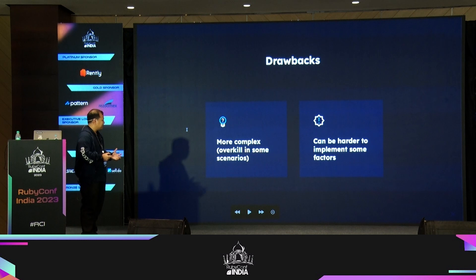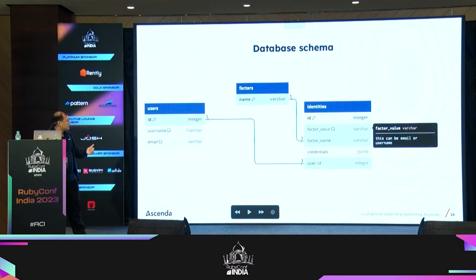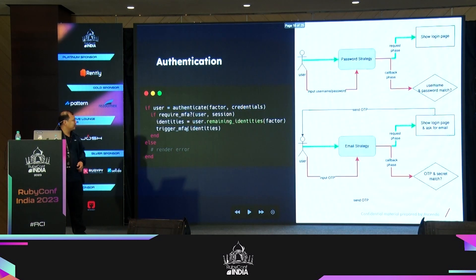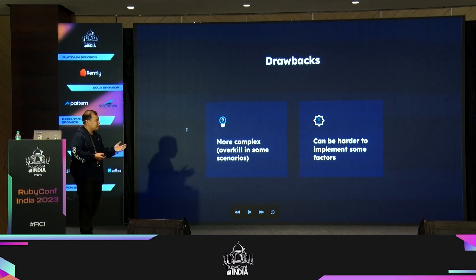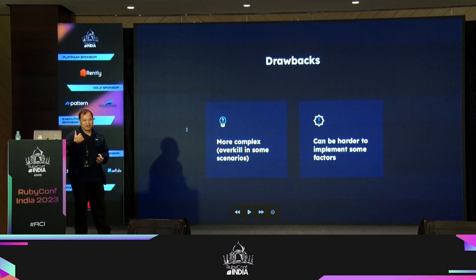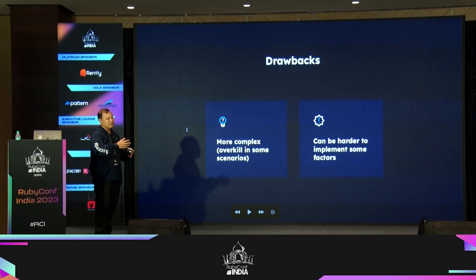What are the drawbacks of this approach? It's much more complex — now you have three tables instead of a single table like before. If you don't really need more than two-factor authentication, you probably don't need to do all of this. But if you need to add a third or fourth factor, this approach becomes valuable. The second drawback is that not every factor can be implemented this way. For example, if you use FIDO with platform verification like a fingerprint, the identity won't transfer to another machine — displaying it becomes tricky for the user.